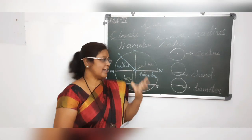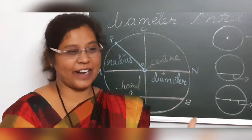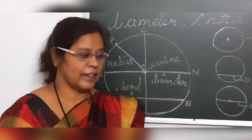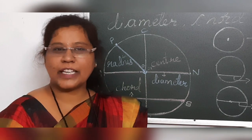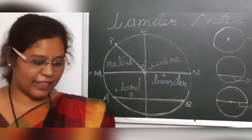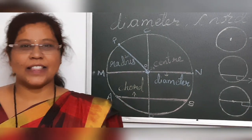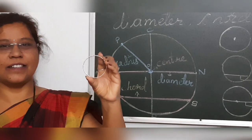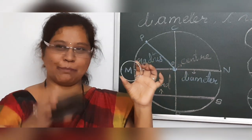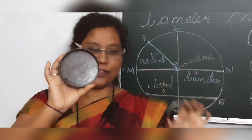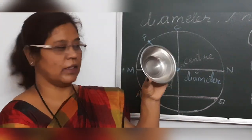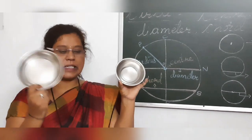Circle is such a thing that attracts the attention of the whole world towards it. Can you give me some examples of circles? The shape of a circle is like a bangle. One more example — it is a lid of a bottle, and you can see it is a bowl, a steel bowl, a steel plate.